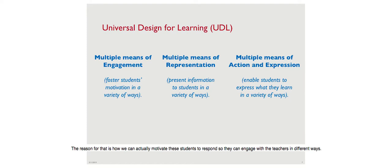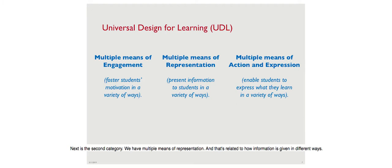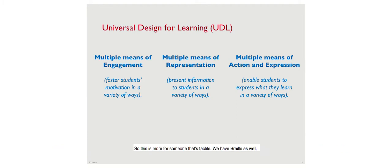Multiple means of engagement is about how we can motivate students to respond so they can engage with teachers in different ways - for example, giving them a reward system. The second category is multiple means of representation, related to how information is given in different ways. This could mean writing on the board, using a number system, tactile bumps, or Braille.